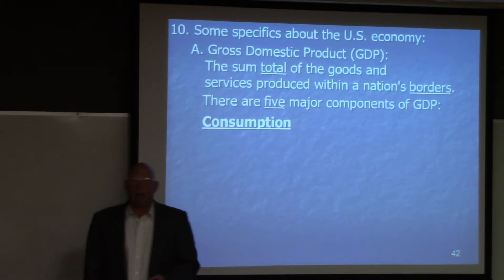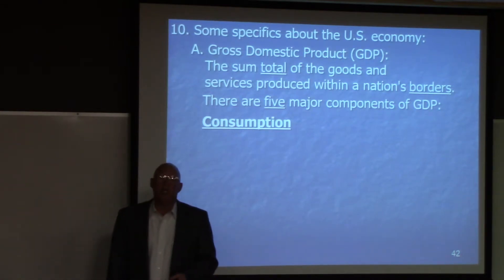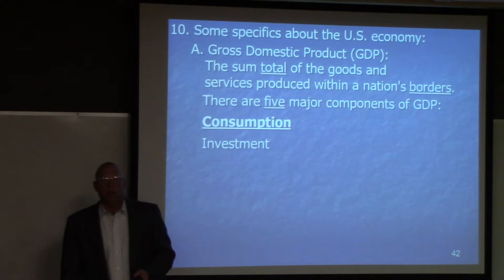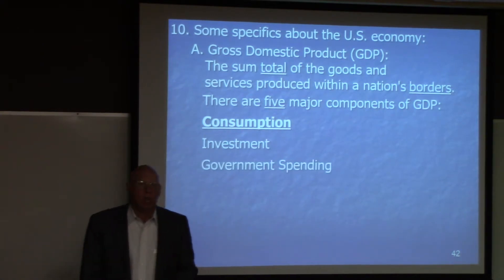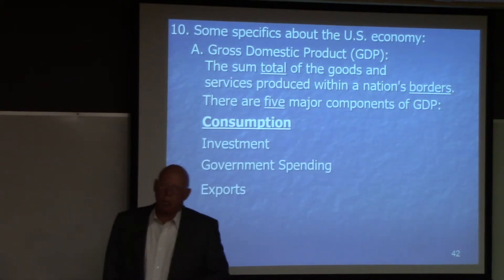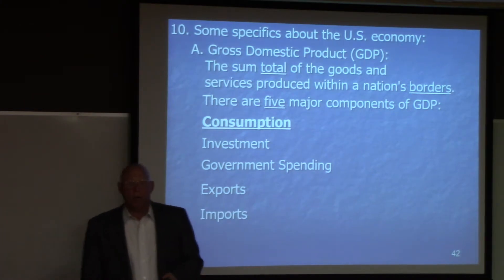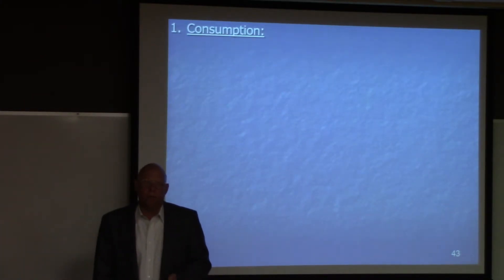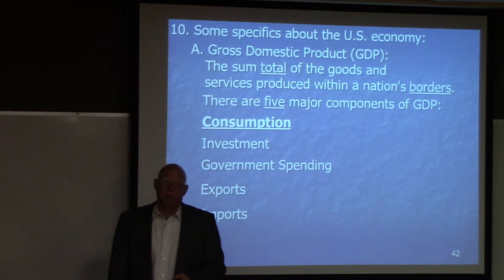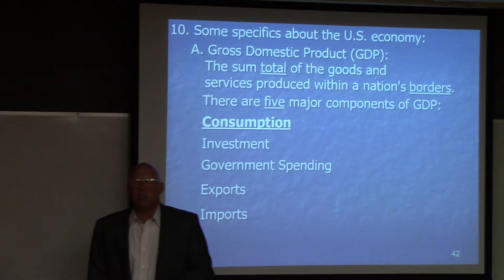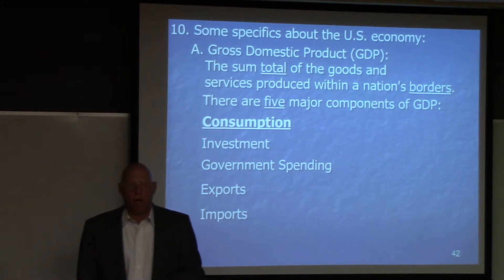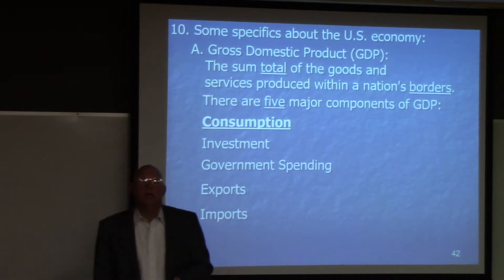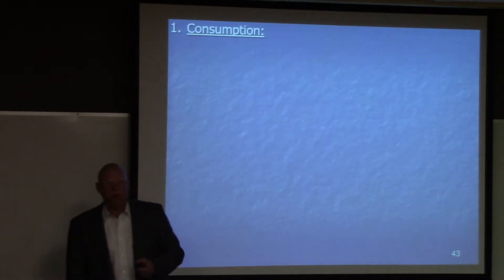So let's look at the five major components of GDP. The first is consumption, then we have investment, government spending, exports, and imports. That's C plus I plus G plus E minus I — you learn that in macroeconomics.